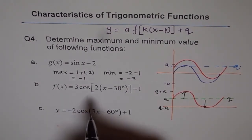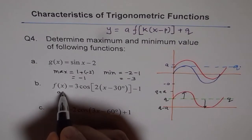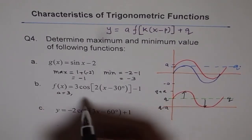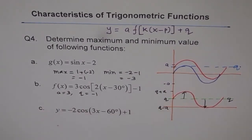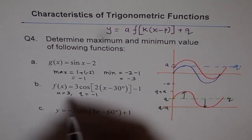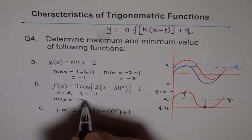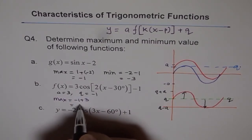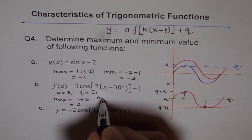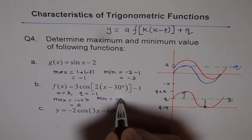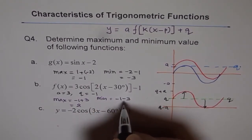Now for this function, what is a? A is 3 for us and q is minus 1. And therefore, our maximum will be, add them up, that is minus 1 plus 3, which is 2. And minimum will be minus 1 minus 3, which would be minus 4. Perfect.